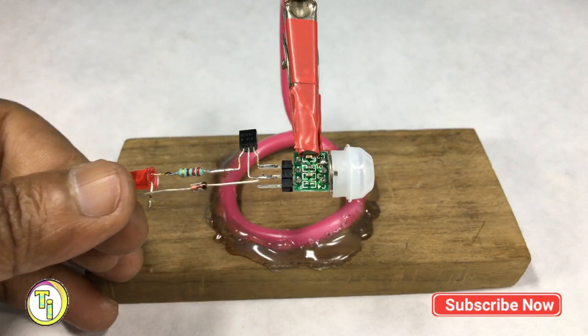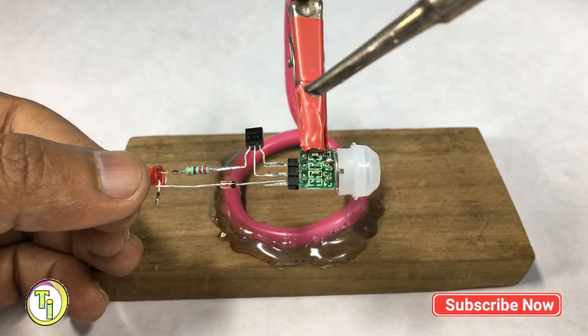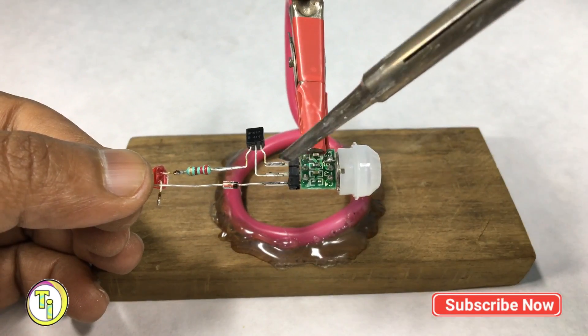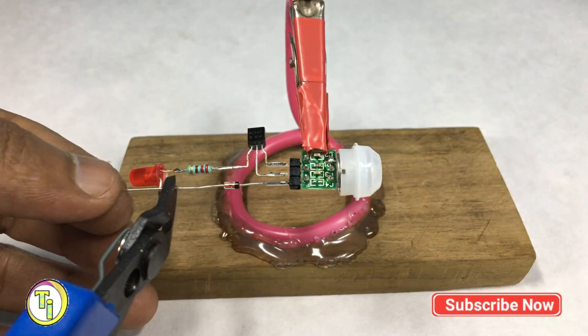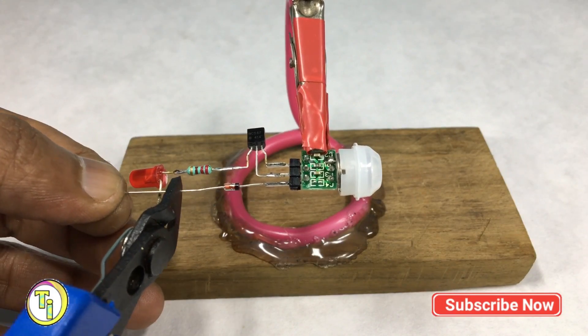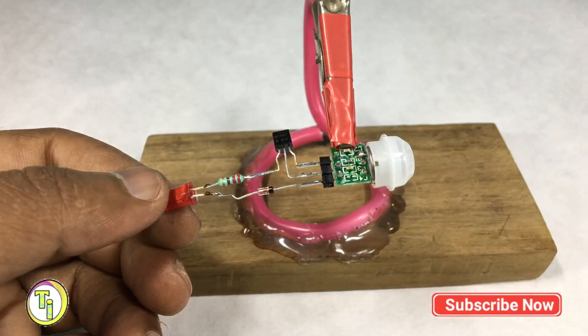Then take the Zener diode and connect the cathode pin to the VCC of the PIR module. Here I am using the Zener diode as it has 0.7 volt voltage drop characteristics, as the PIR module is 3.3 volt and the supply voltage is 4.2 volt lithium-ion battery.